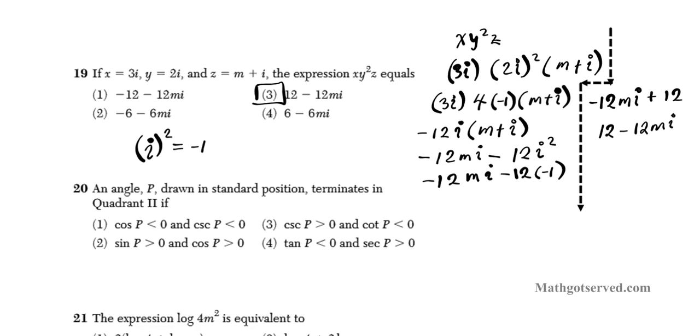Let's move on to question 20. It says if an angle P is drawn in standard position, terminating quadrant 2, which of the following is true? Just to refresh your memory, you have two parent trig functions sine and cosine. If you reciprocate sine, you have cosecant. If you reciprocate cosine, you get secant. And tan is a quotient of sine and cosine. If you reciprocate that, you get cotangent. You have to remember that these trig functions, they keep the same sign in their respective coordinates. So whatever sine has, cosecant inherits that sign because it's just a reciprocation of sine.